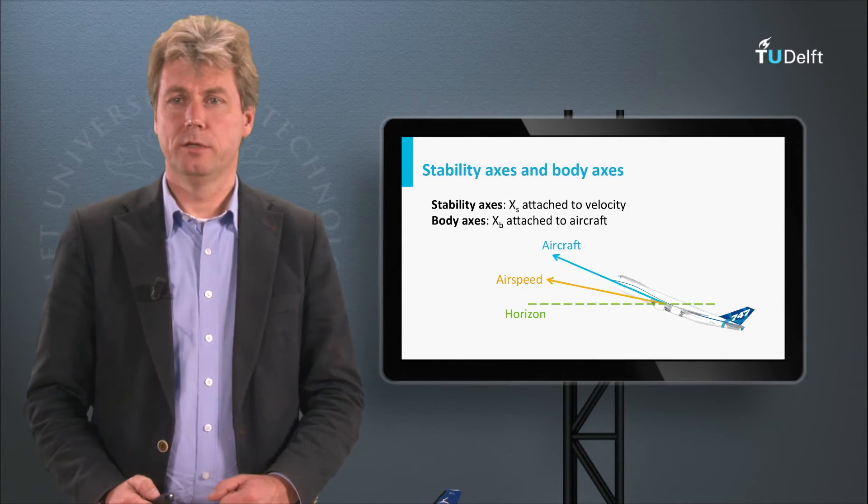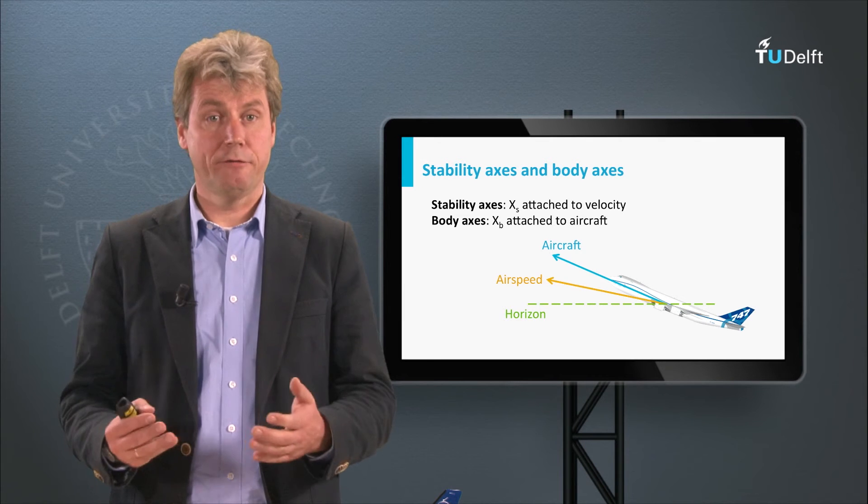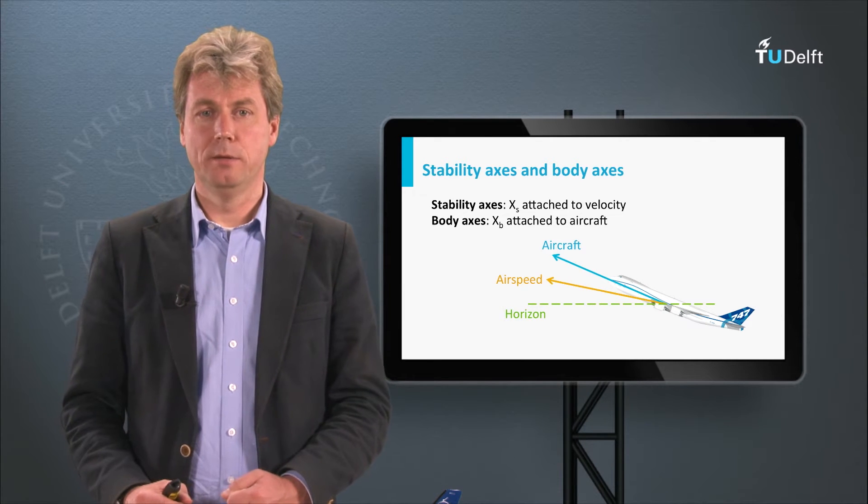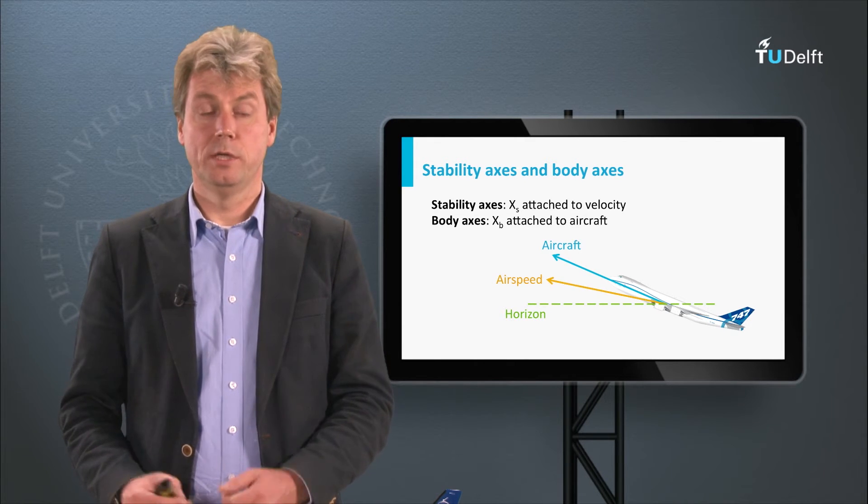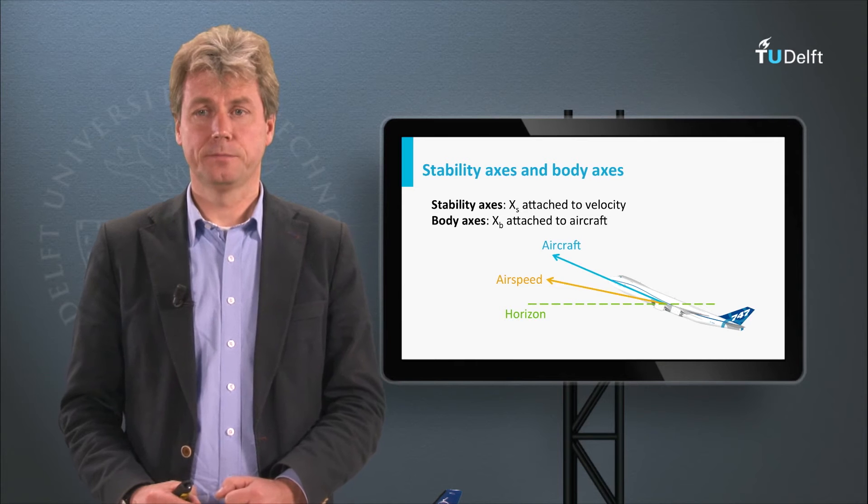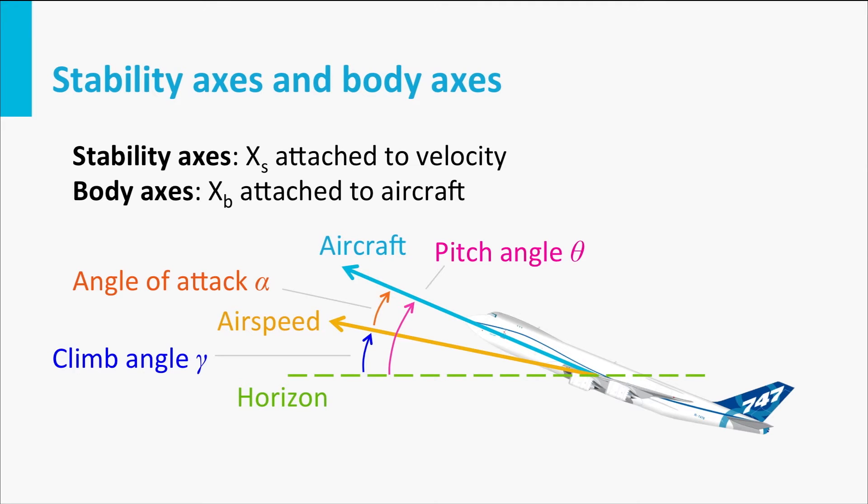If we look at the results of our equation, here we see the three different reference systems that we have. We see the body axis indicated by the blue arrow, we see the horizon, that is our reference for the earth, and we see the airspeed indicated in yellow. And this means that the angles between them also have different meanings. So the pitch angle, the angle of the body axis with the horizon theta, is the angle between the green horizon and the blue aircraft axis here, indicated in magenta.